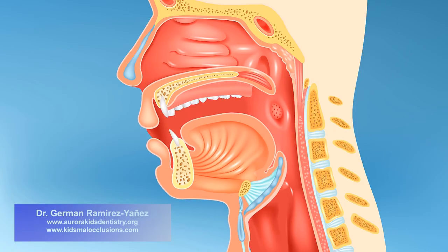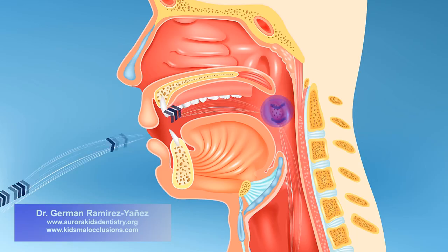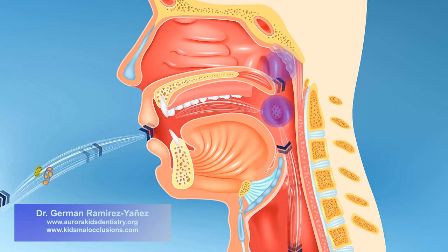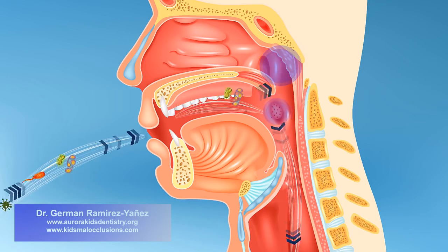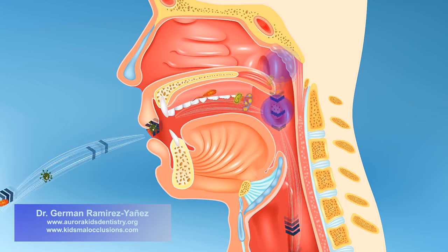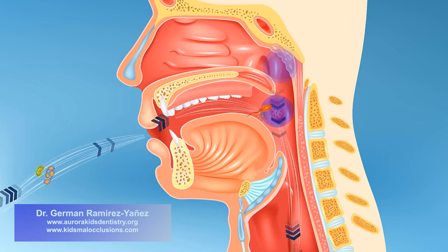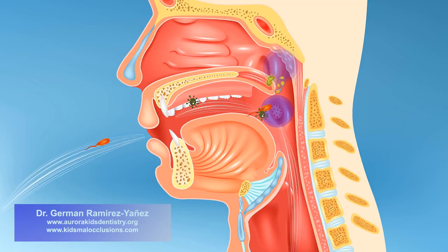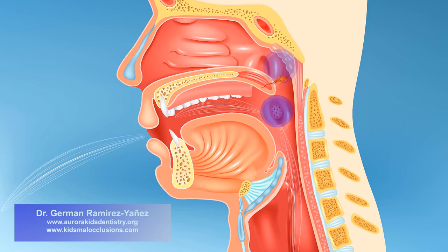Mouth breathing allows the air to pass directly into your throat, where the adenoids and tonsils are located. In that way, the air entering into your body through your mouth has not previously been purified, and the lymphoid tissue in the adenoids and tonsils becomes the first defensive barrier against the harmful particles contained in the air.